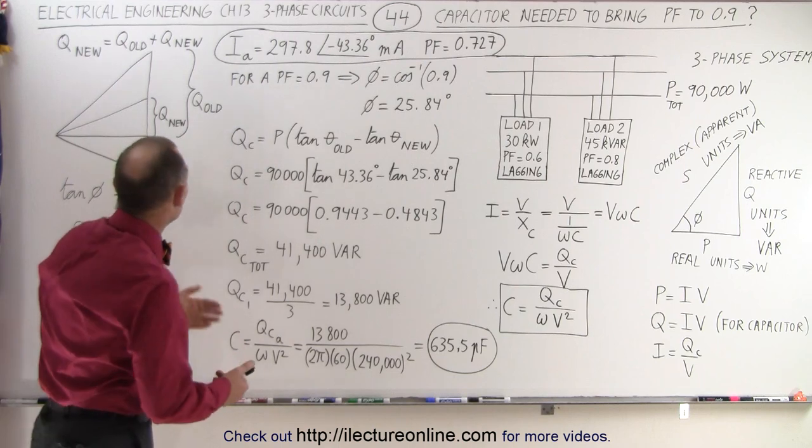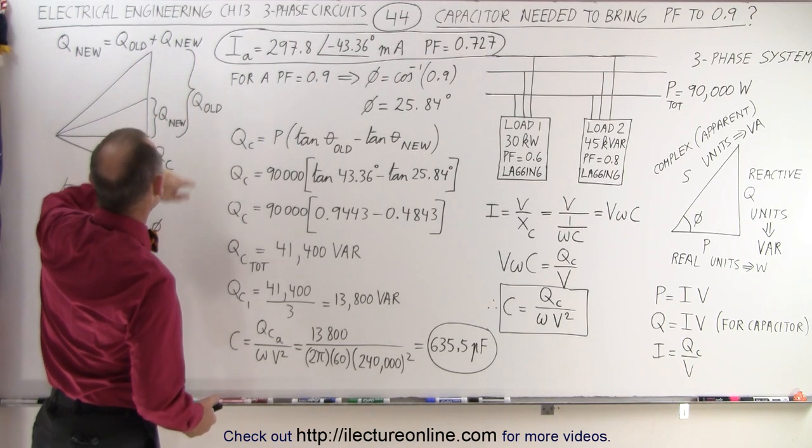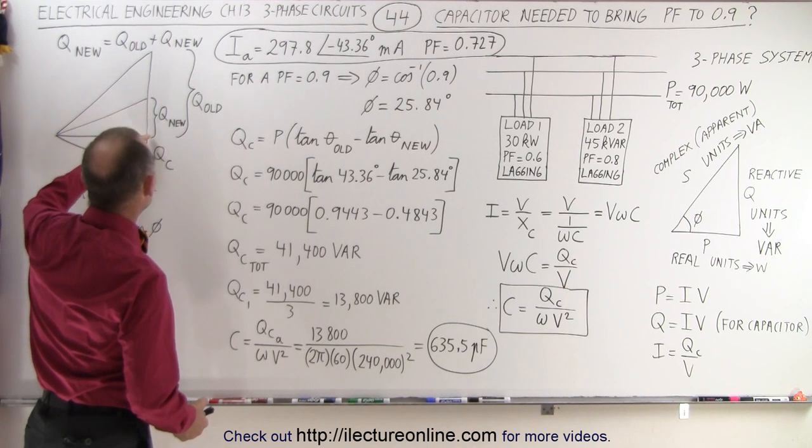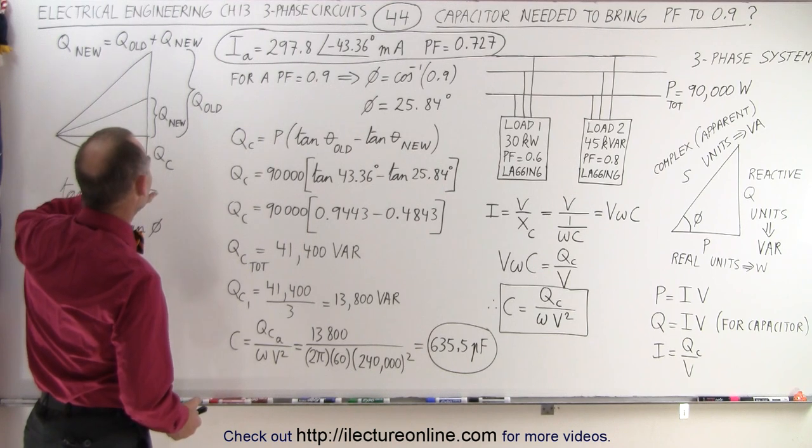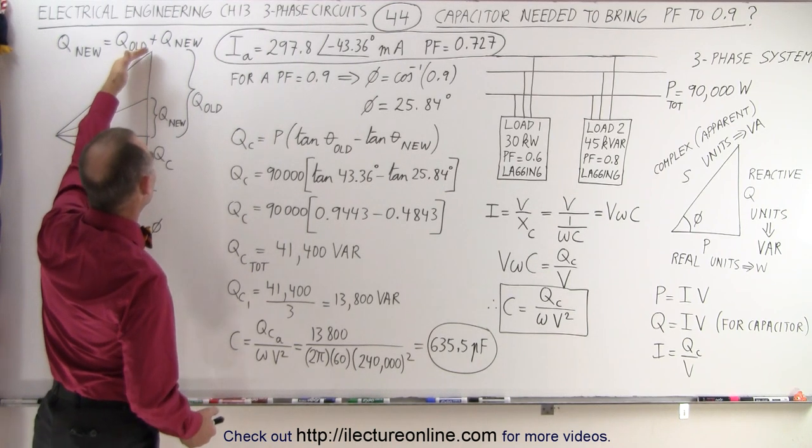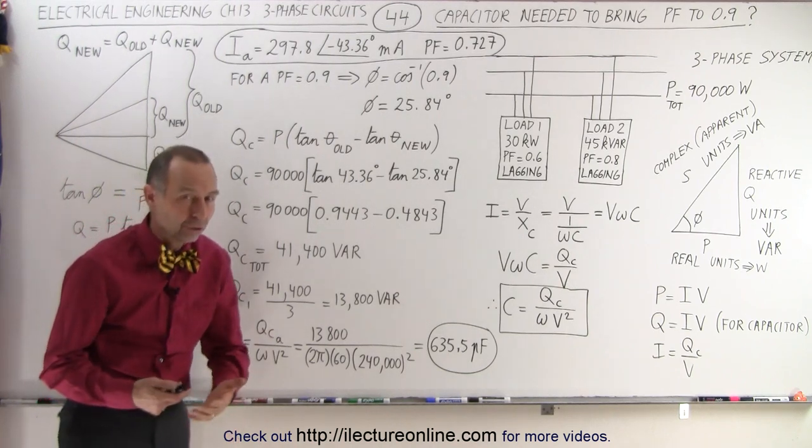Graphically, we have it like this. Let's say that here we have the old reactive power and we want the new reactive power to be smaller, so we need to have some additional reactive power added from the capacitor to negate that, so that from the old we get to the new, we get a smaller phase angle, and therefore a larger power factor.